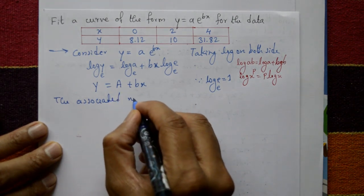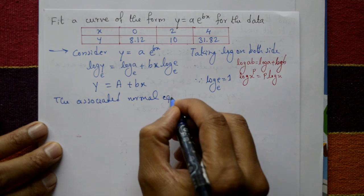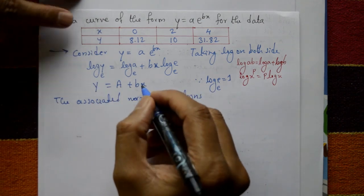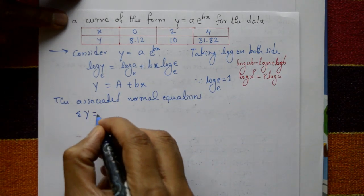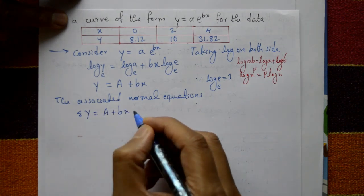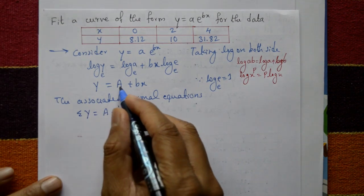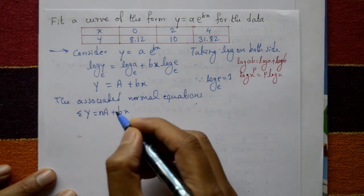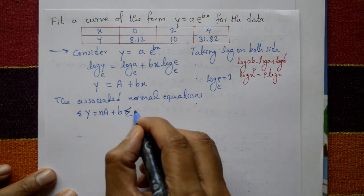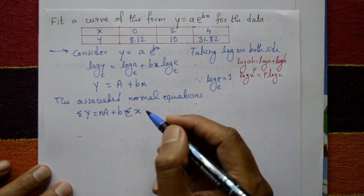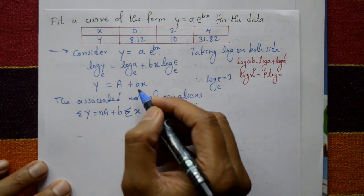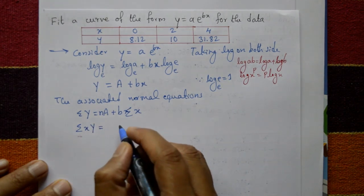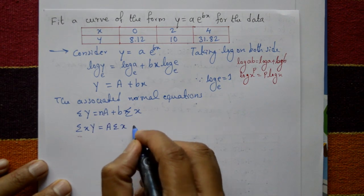The associated normal equations are: taking summation of Y = nA + b·Σx, and multiplying by x and taking summation: Σ(xY) = A·Σx + b·Σ(x²).